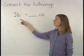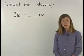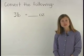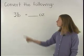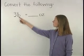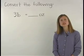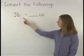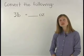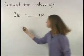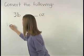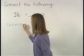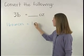LB is the abbreviation for pounds and OZ is the abbreviation for ounces. To convert three pounds into ounces, first find the conversion factor for pounds and ounces, which is 16 ounces equal one pound.